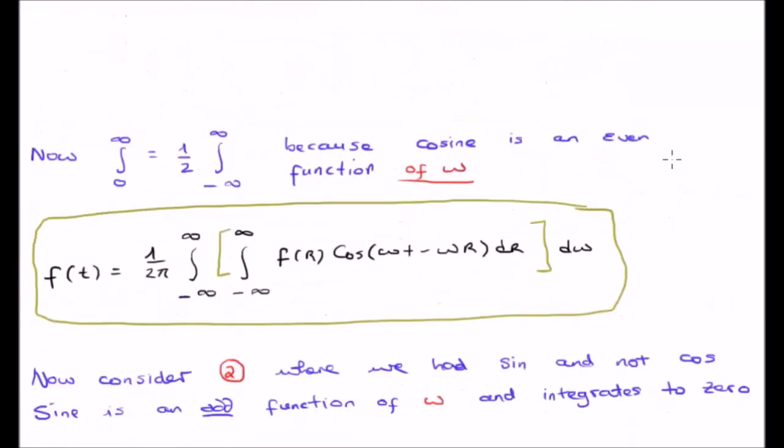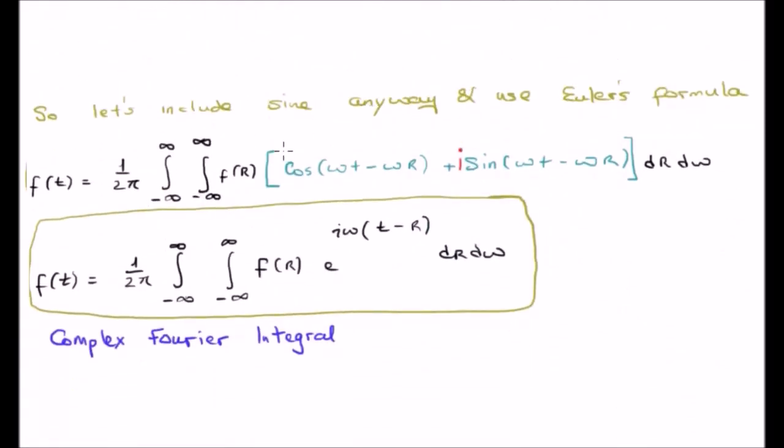So the sleight of hand we are going to do is we are going to include a sine term anyway in this particular expression and invoke Euler's formula. So we had the cosine which we started with, add it by i times the sine of the corresponding argument.